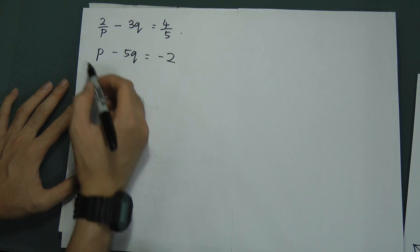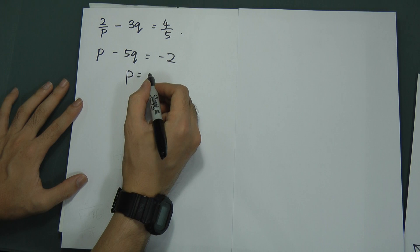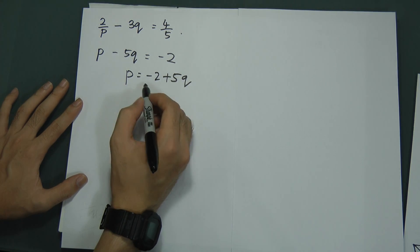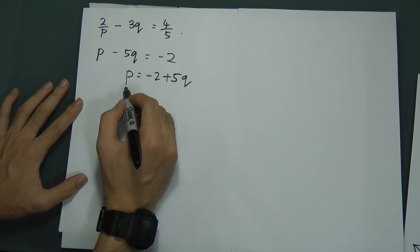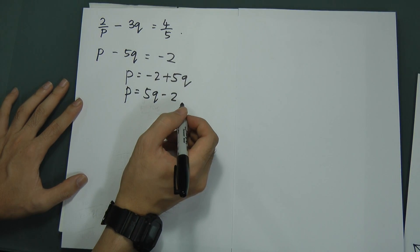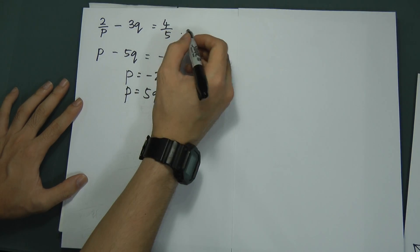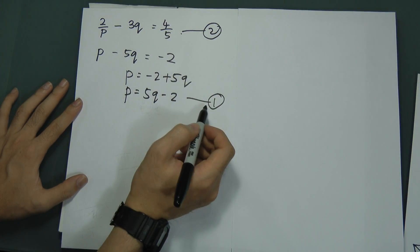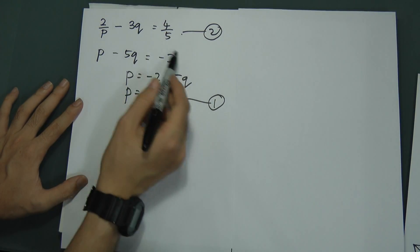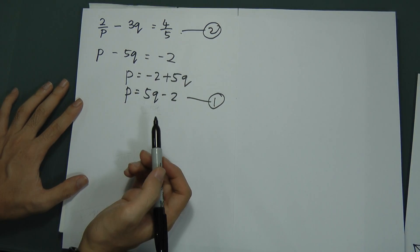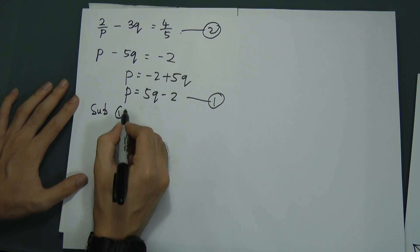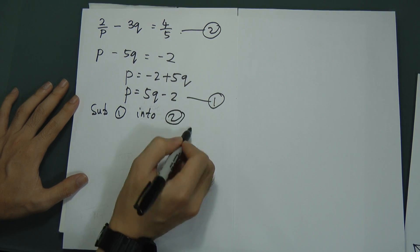Starting from the second equation, I get p equals negative 2 plus 5q. Always put the positive value in front as a habit, so write it as p equals 5q minus 2. This is equation 1. Remember: when you call this equation 1, you cannot substitute it back into the same equation it came from — you'd get zero, meaning nothing. Make sure you substitute into equation 2.